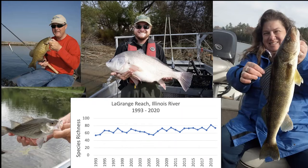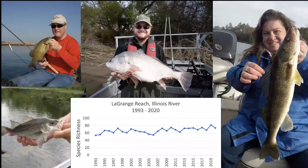As water quality improves and overall fish numbers return, we also see improvements in these native rough fish. Fish diversity in the LaGrange reach has been pretty steady since the mid-1990s. What we're seeing throughout the Midwest, particularly on river systems, is that anglers are becoming more and more interested in targeting not just traditional game fish but also non-game rough fish that are native to these systems.